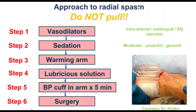When there is radial spasm and entrapment of a radial catheter, the first line is acute vasodilators, both locally and systemically. The second is to give sedation, sometimes with propofol, sometimes even general anesthesia. Warm blankets to warm the arm. Sometimes we inject a lubricious solution such as rotaglide or viperglide. There is also ischemia-induced dilation by inflating a blood pressure cuff in the arm with the entrapped catheter for five minutes — when the cuff is deflated, vasodilation occurs and can help free the catheter. Finally, if everything else fails, surgery may sometimes be needed.